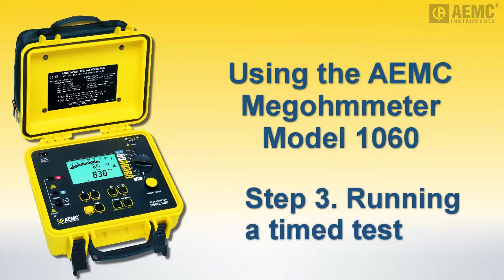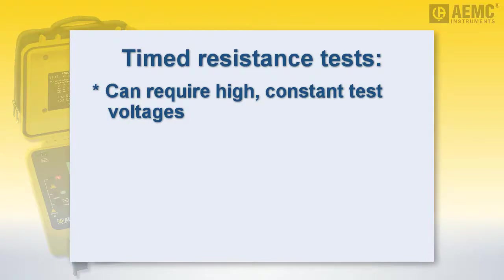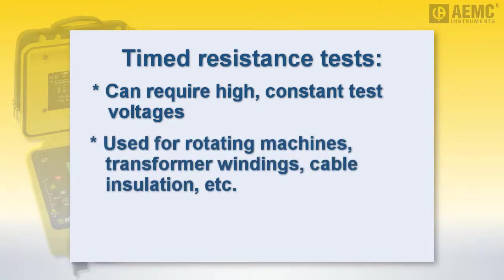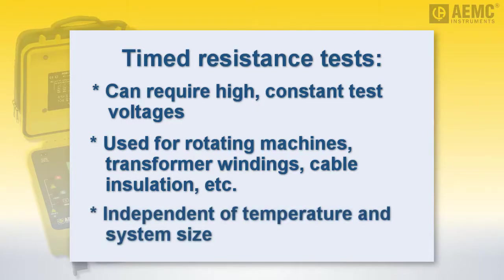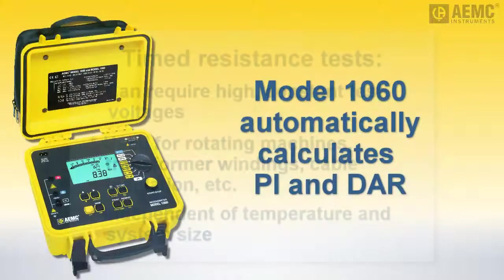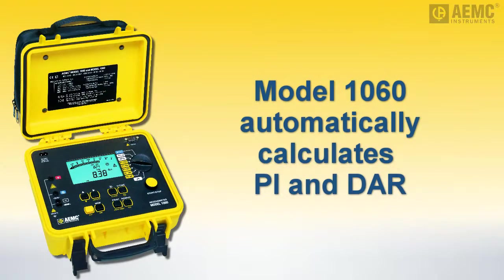Now we'll demonstrate a more complex insulation resistance measurement method known as the Timed Resistance Test. This involves configuring the test to run for a defined period of time. Timed resistance tests on large rotating electrical machinery, especially systems with high operating voltage, require high insulation resistance ranges and very constant test voltage. This test is also useful for measuring resistance in transformer windings and cable insulation. Since this test provides meaningful results within a single 10-minute duration, it is relatively independent of temperature and also independent of the size of the system under test. By recording measurements at certain intervals during the timed test, the Model 1060 can automatically calculate and display values such as the polarization index and the dielectric absorption ratio.